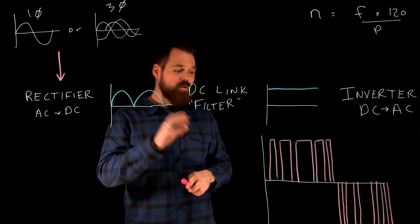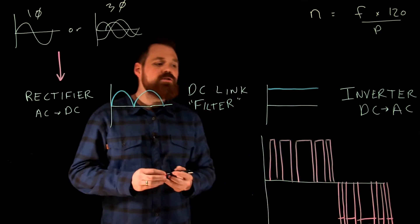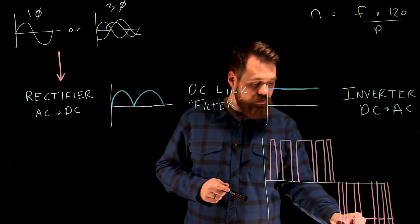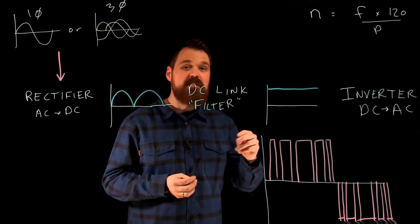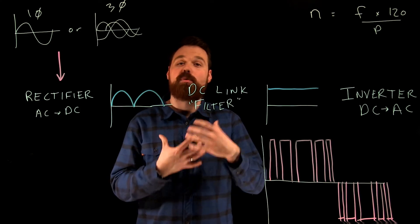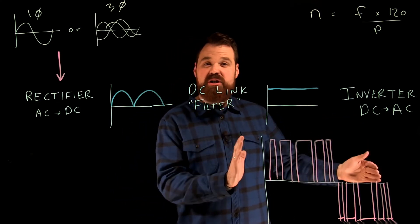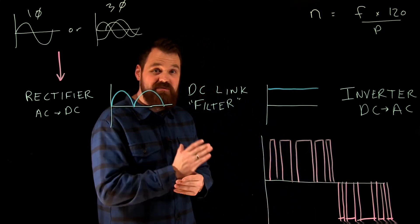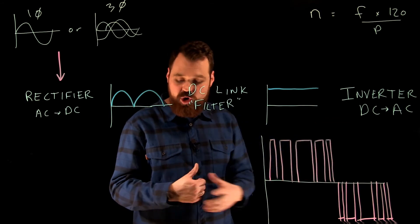We're talking very, very short pulses, very quick—sometimes 1000, 2000, 3000 times per second we're switching this on and off. The speed at which we switch it is called the carrier frequency of a VFD. So it's usually thousands of hertz, thousands of times a second it can turn on and off.